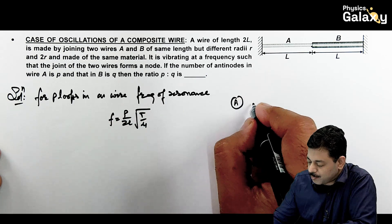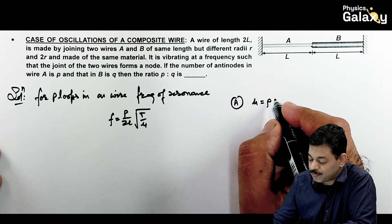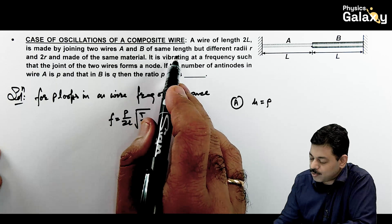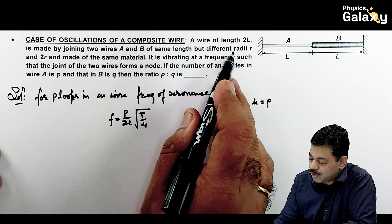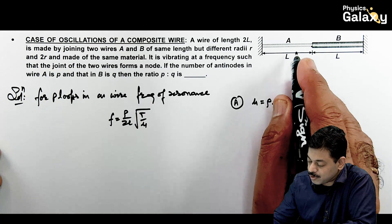Mu is given as density multiplied by area of cross section. And here you can see the same length wire, radii is R and 2R and the material is same. So density is same. This is rho multiplied by cross sectional area. For the first wire we can write mu A is equal to rho multiplied by pi R square.